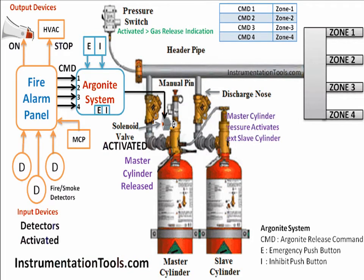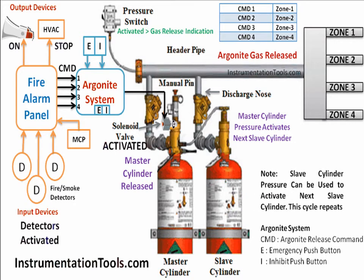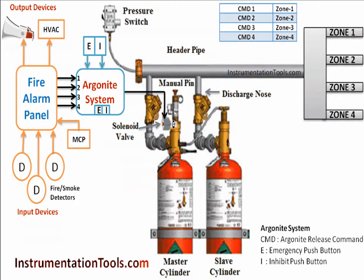In this animation we consider four zones. Zone means areas, locations, or rooms. If fire and smoke detectors are activated in zone 4, then the fire panel sends command 4. The fire alarm panel can send commands from CMD1 to CMD4 depending on the fire and smoke detector activation in the respective zone. The Argonite System then receives the Argonite Release Command from the fire alarm panel.